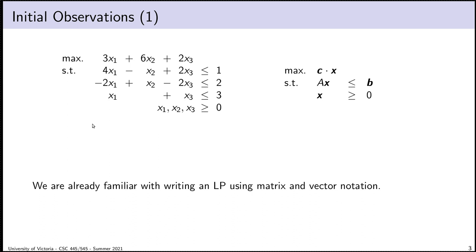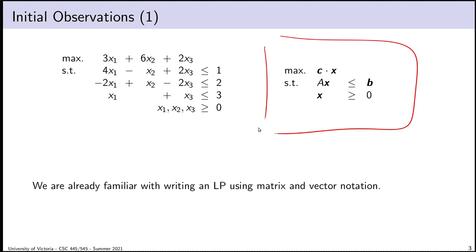Writing out an LP in terms of actual coefficients like 4 and 1, or negative 1 and 2, is one thing. But having to write it symbolically as A11, A12, and so on becomes unreadable quickly. If instead we represent our standard form linear program in matrix-vector notation, it's more convenient. So we already know there's a parallel between a standard form LP and linear algebraic notation. The question is whether that's just a notational similarity, or something deeper.